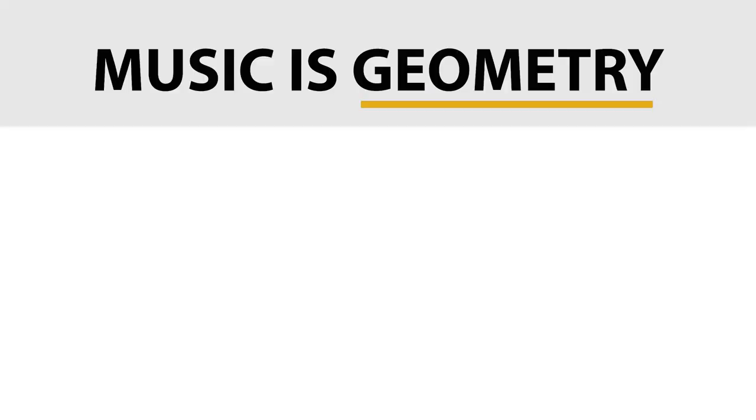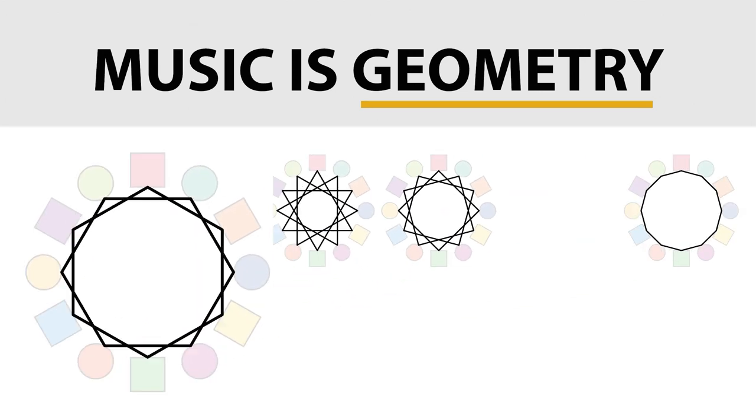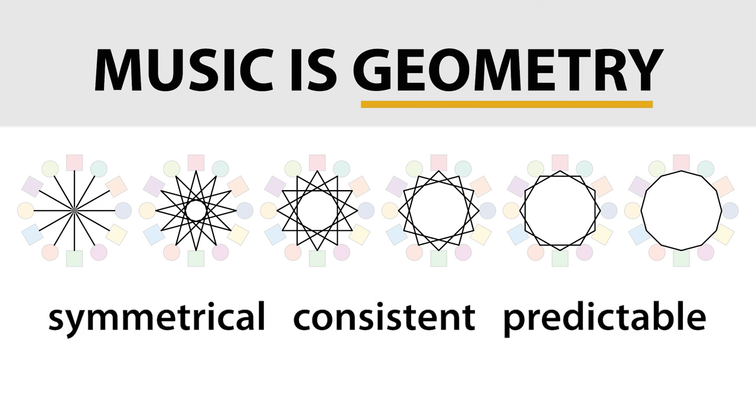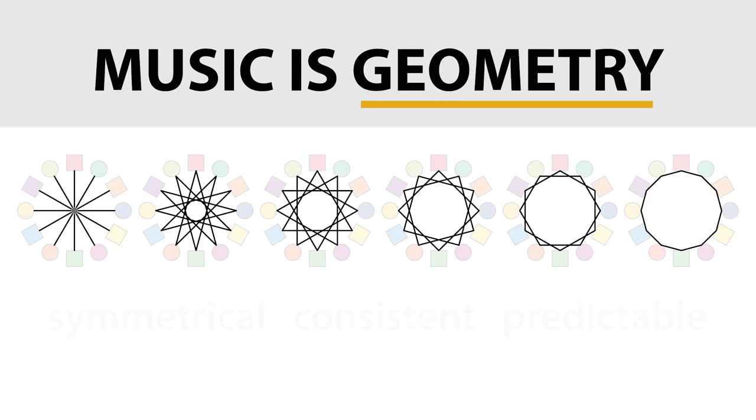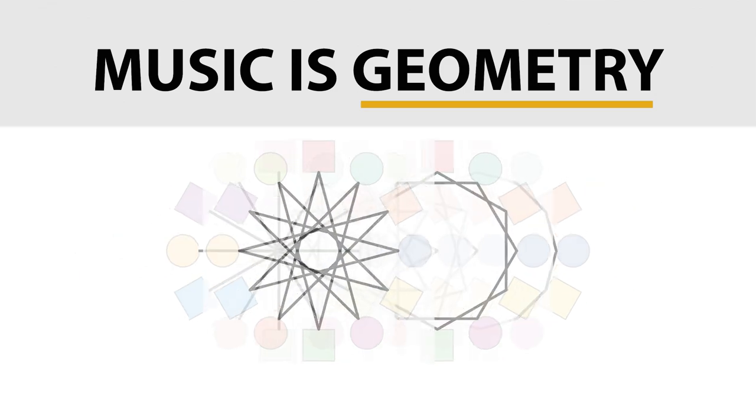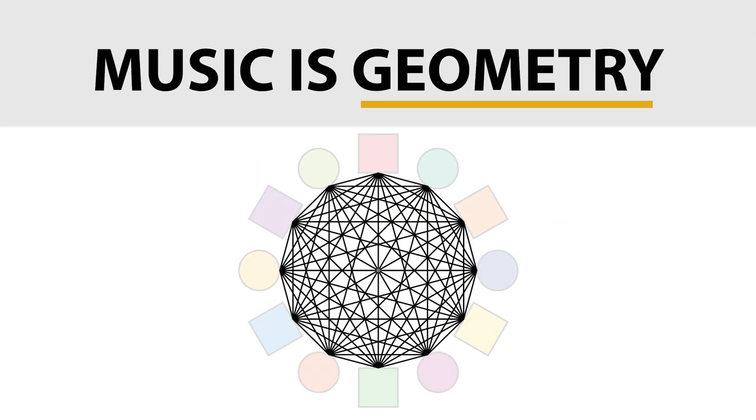Geometry here just refers to circles, squares, triangles, hexagons, and shapes like this—simple patterns that are symmetrical, consistent, and predictable that give music order and structure and explain why music sounds so good, because everything in music, all of music theory, is built on a framework of geometry.